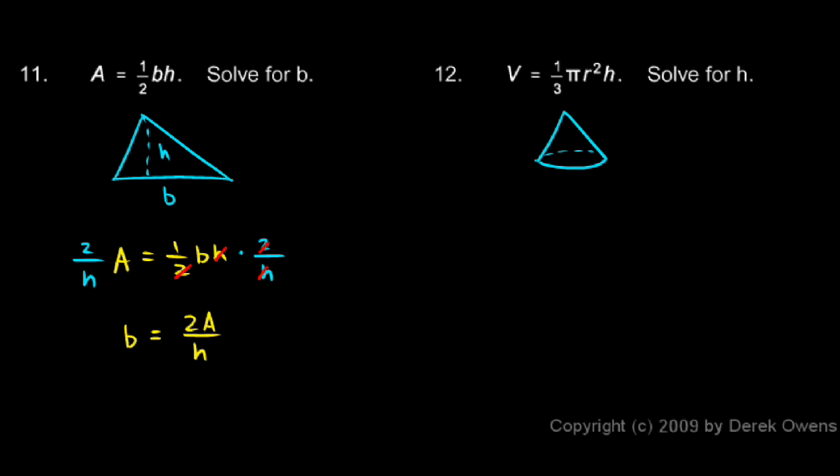If I have a cone, three-dimensional figure, that has a radius r and a height h, the volume of the cone is given by this formula, 1 third pi r squared h. So we need to solve this for h.